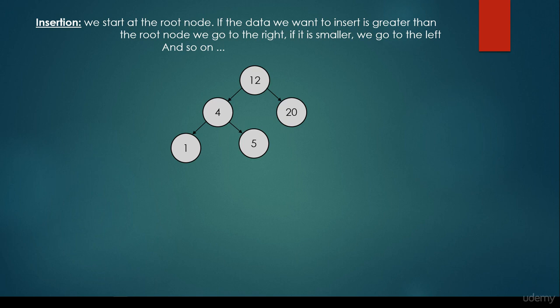So basically this is how we build up a binary search tree. We just have to consider nodes — if it's smaller, then we go to the left. If it's greater, we go to the right. Very simple.